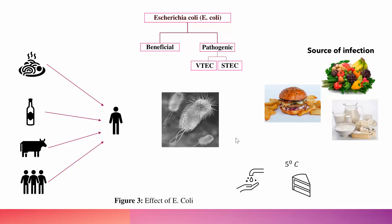Why did we choose E. coli bacteria as a dataset? E. coli is a bacterium that commonly lives in the lower intestine of warm-blooded organisms, including humans and animals. In fact, they are part of our normal bacterial flora. Most E. coli strains have beneficial functions — for example, they may prevent the establishment of harmful bacteria in our intestine.